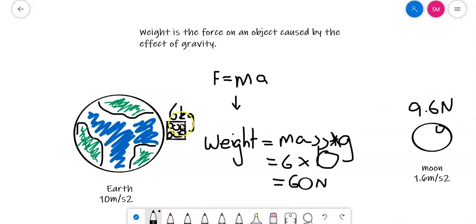The weight of an object does change according to where it is in the universe, whereas the mass of the object, whether it's on Earth or on the moon, will still be 6 kilograms because it's still got those 6 particles in it.